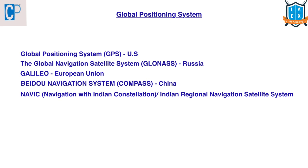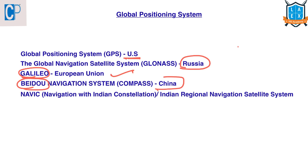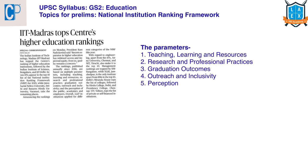GPS — Global Positioning System — is a space-based global navigation satellite system that provides location and time information in all weather conditions and at all times. GPS is a US-owned utility. Russia has GLONASS (Global Navigation Satellite System), the European Union has Galileo, China has BeiDou, and India's version is NavIC — Navigation with Indian Constellation — also known as Indian Regional Navigation Satellite System.